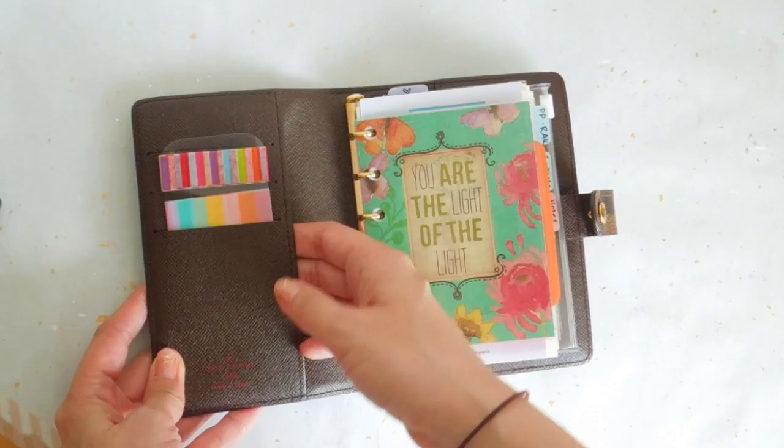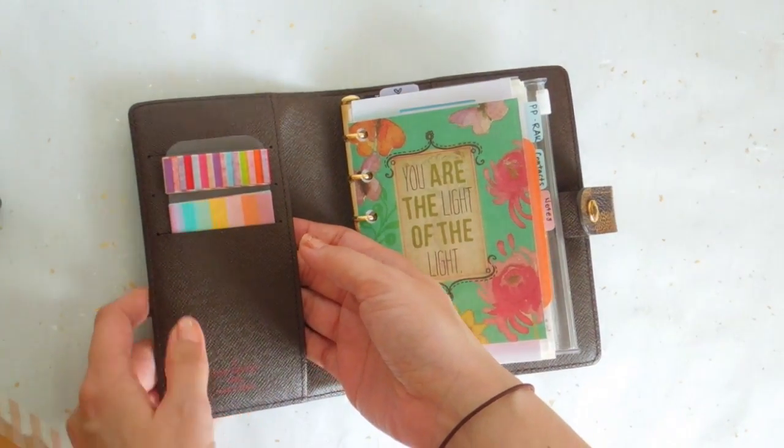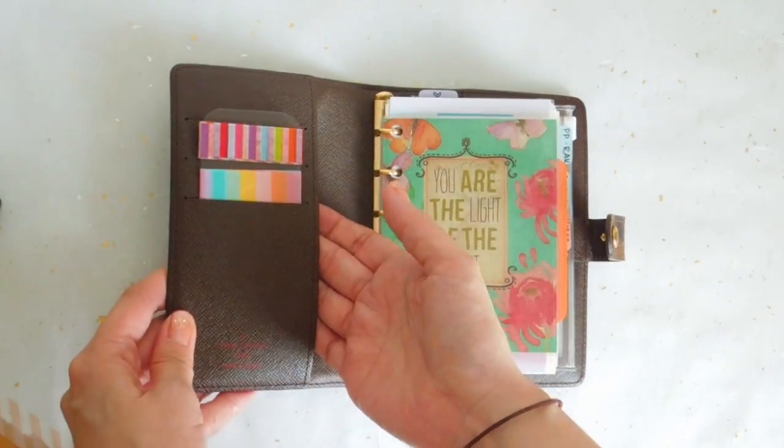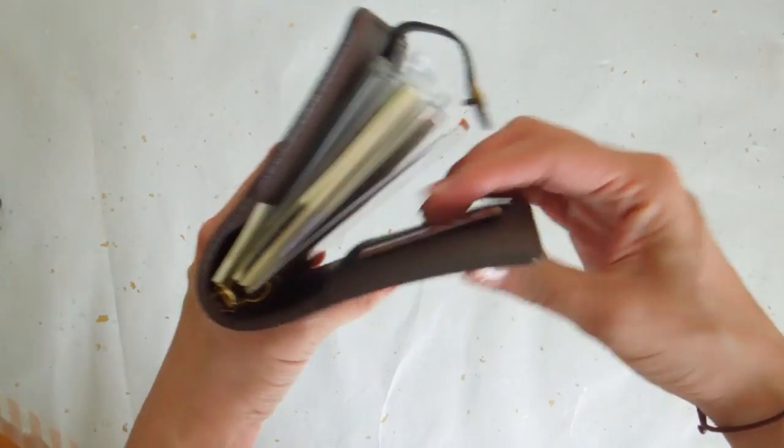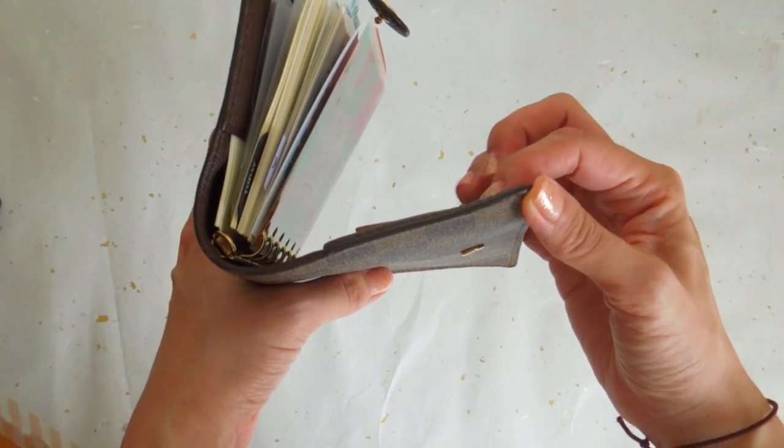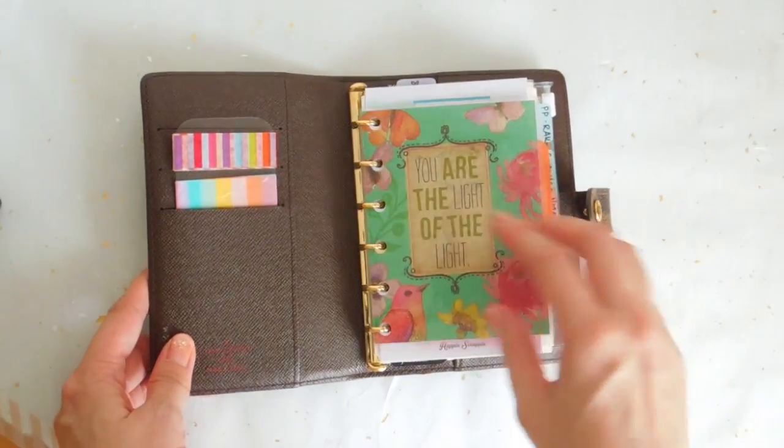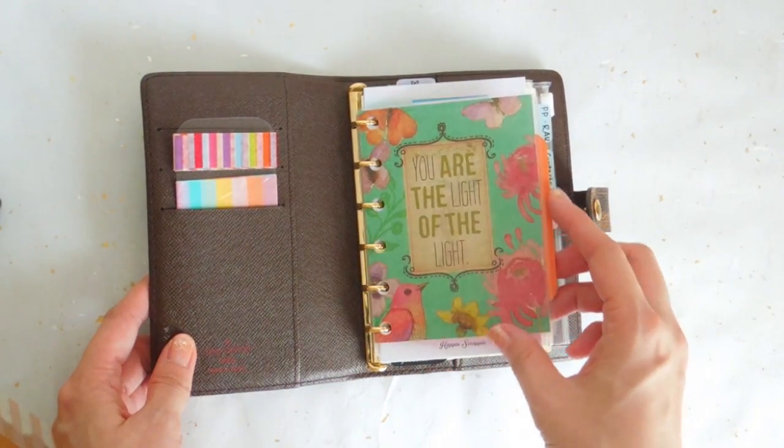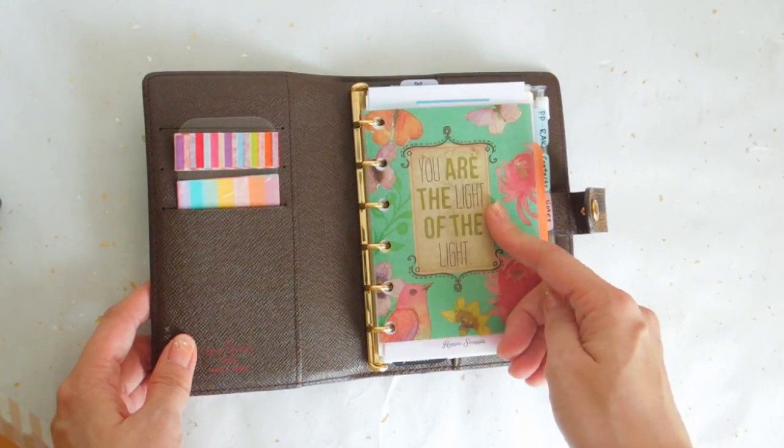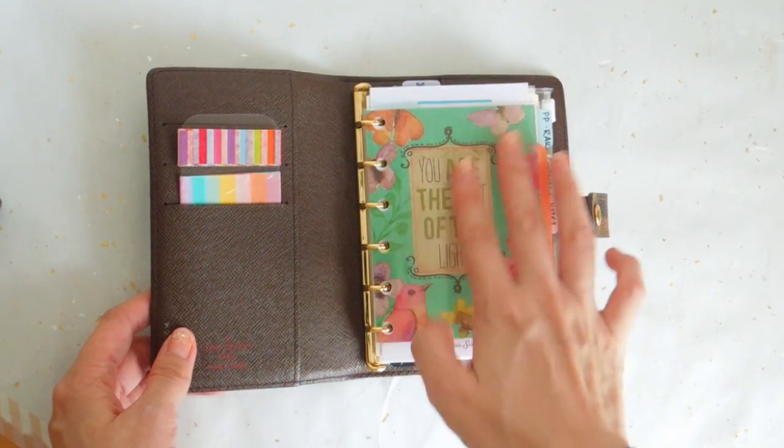There's nothing in the pocket back here. I suppose I could put some notepaper or maybe some project life card to kind of straighten this part out. And then here is just a laminated card that says you are the light of the light, which is really pretty.